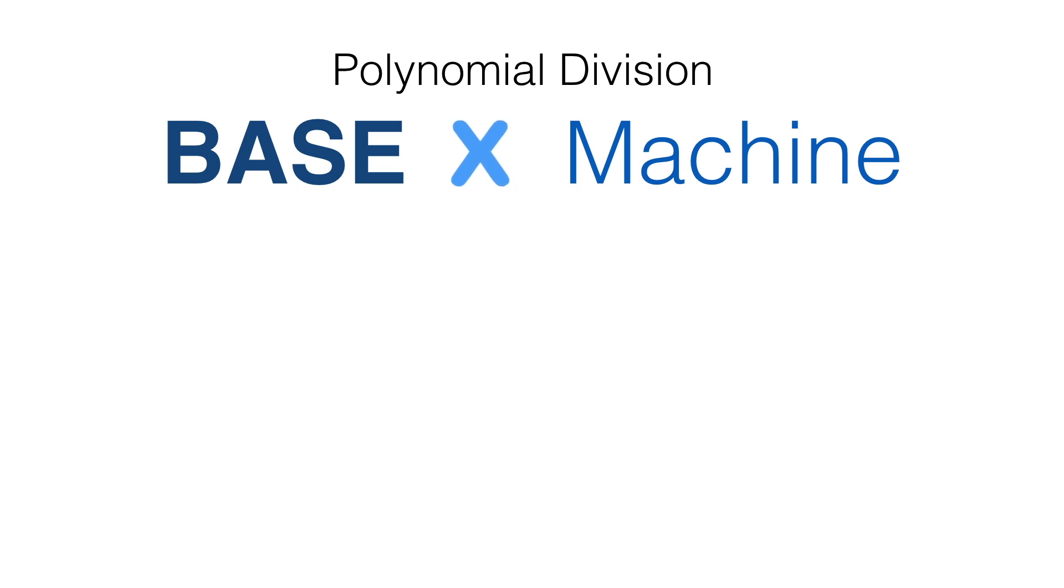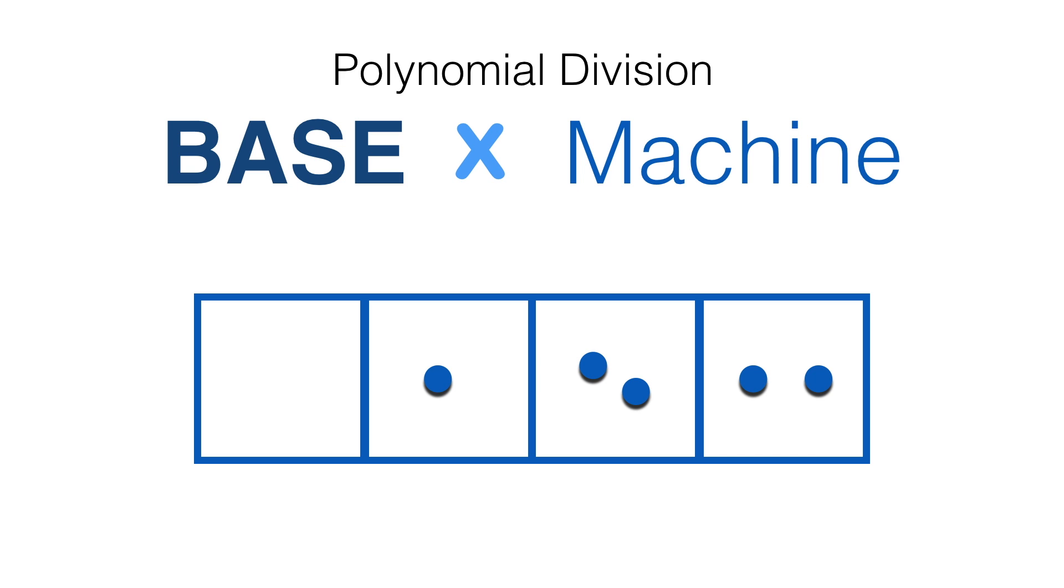Today we're going to talk about a base X machine. Here's a base machine, but what base is it? We can still do math with it even if we don't know the base. We'll just call it base X. The first column is the ones column, the next column is the X's column, and then we have the X squared column, and the X cubed column. If we write down this number, we have one X squared, two X's, and two ones. That's a polynomial.